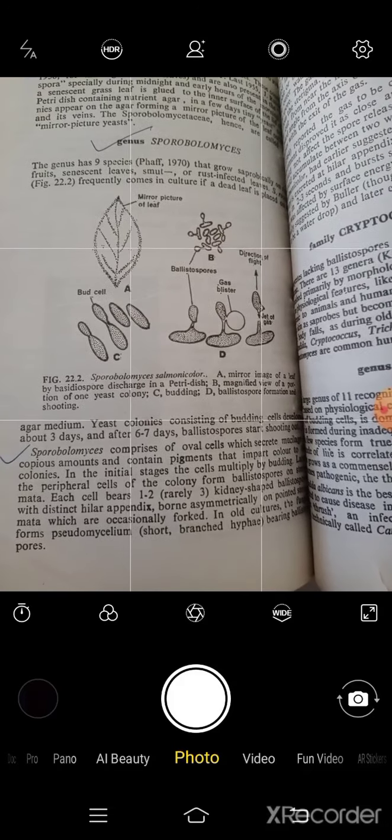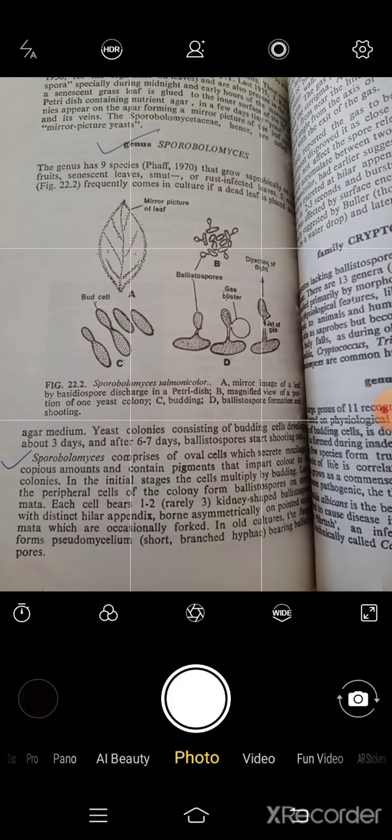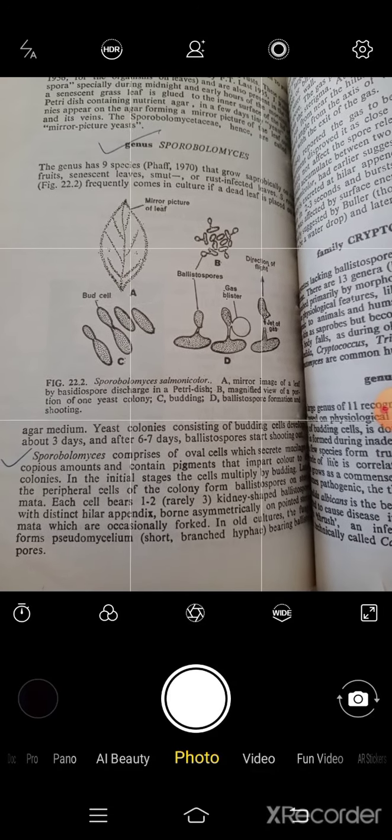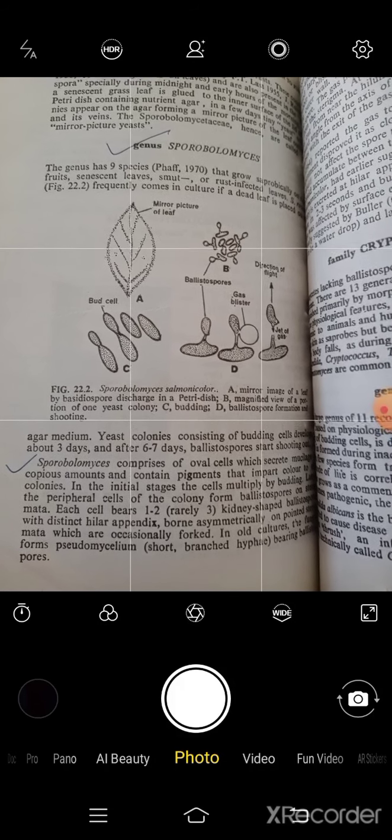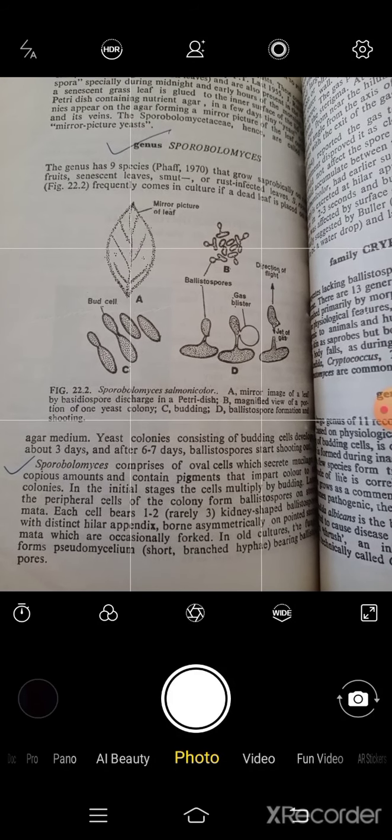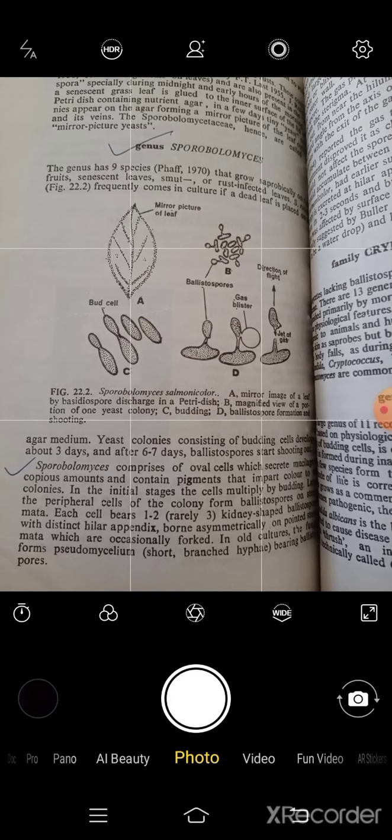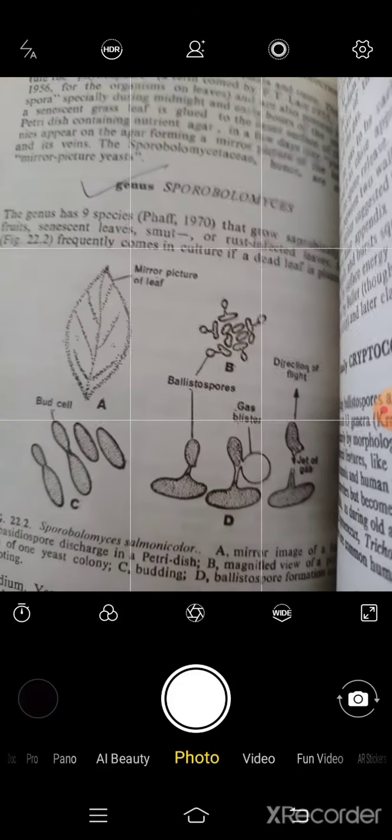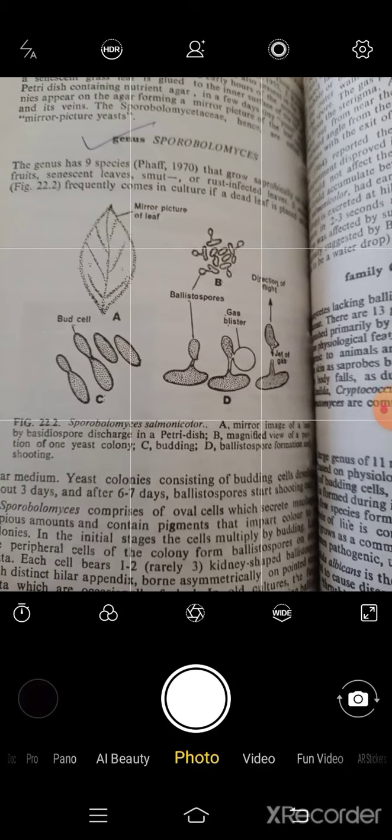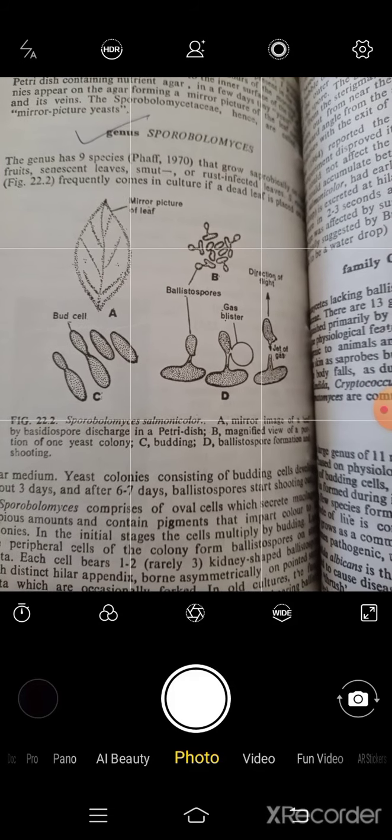So let's start first with the genus sporobolomyces, which is a very important member of deuteromycotina. This genus has nine species which grows separately on fruits, senescent leaves, and smut and rust infected leaves.